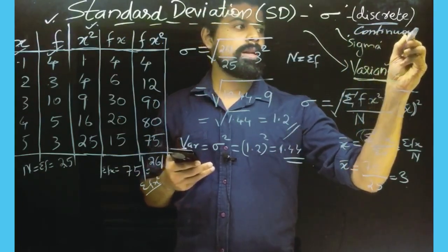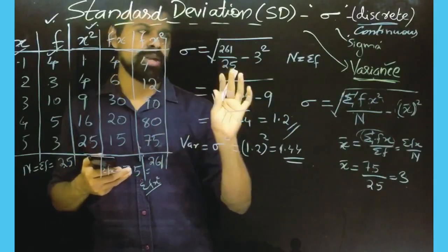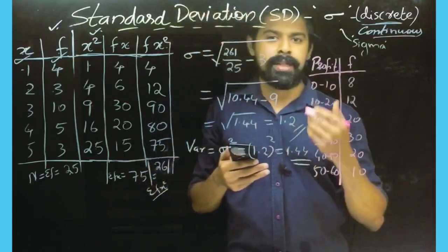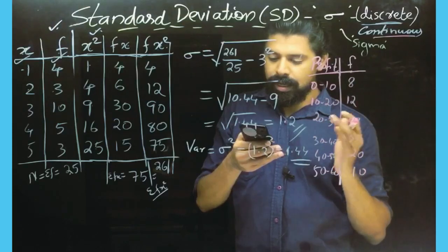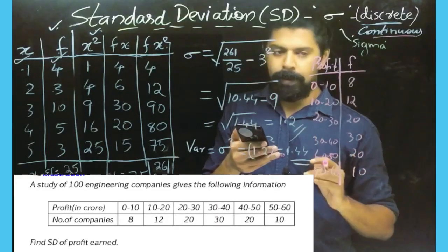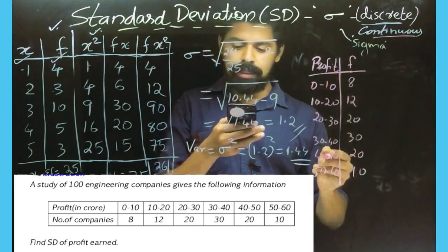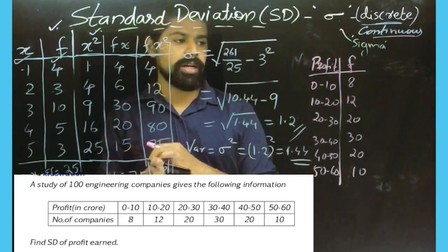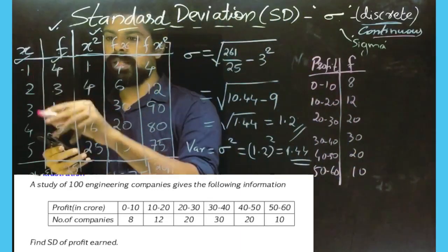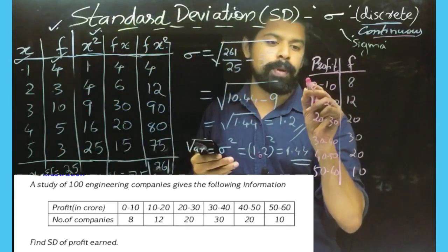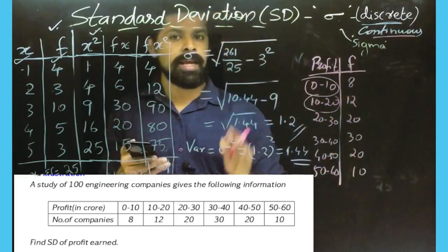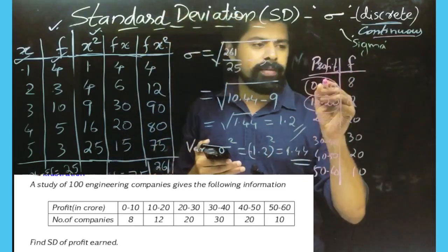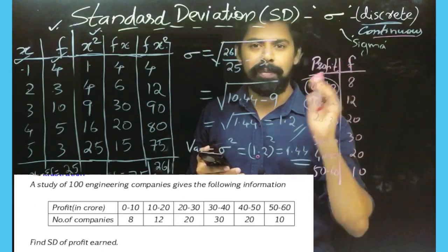This is the continuous frequency data. A study of 100 engineering companies gives the following information. Profit and cost, number of companies — frequency f. Find the profit and standard deviation. This is grouped data — correct, exact values. We have done a video on discrete frequency data; see the link at the top. Now we have the continuous frequency data and the method.